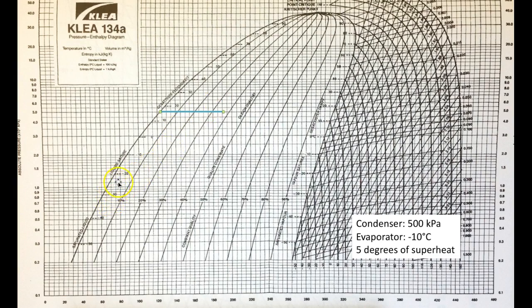If you look on the sides next to the saturated liquid line and the saturated vapor line, we have temperature readings: 0°C, minus 10, minus 20, minus 30, and so on. If we draw a line straight across, we run into the same temperature on the other side — for example, minus 10 on one side meets minus 10 on the other. So we know our evaporator is at minus 10°C, and we put a line at that level in the mixed region.